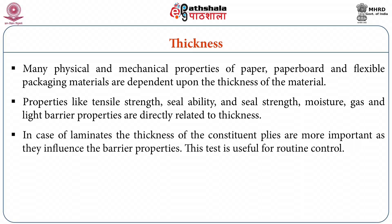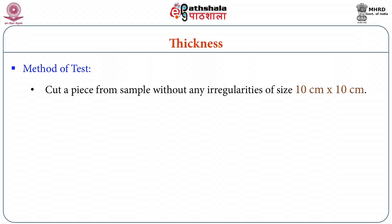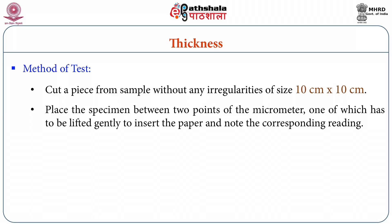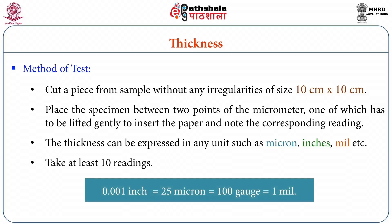In the case of laminates, the thickness of the constituent plies is more important as they influence the barrier properties. This test is useful for routine control. For the method of test, we need to cut a piece of sample without any irregularities into the size of 10 centimeter by 10 centimeter, placed between two points of the micrometer — one of which has to be lifted gently to insert the paper — and note the corresponding reading. The thickness can be expressed in any unit such as micron, inches, mill, etc., but we need to take at least 10 readings and then average them out.